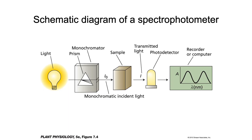We can measure the wavelengths of light using a spectrophotometer. A light with various wavelengths is shown through a prism, which separates the light into individual wavelengths. This is then shown through a sample, and light will pass through as transmitted light and be detected by a photo detector. You can then plot on a computer how the wavelengths are being transmitted or absorbed by the sample. Those wavelengths that are not transmitted are absorbed, and you can make an absorption spectrum of a sample.